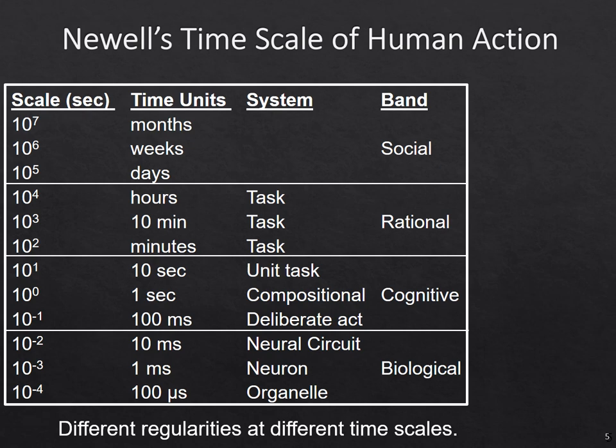There are regularities at these different timescales that can be studied somewhat independently of the timescales above or below them — similar to the concept in the physical sciences. In physics we talk about low-level physical activities; in chemistry there are regularities we can study independent of physics; in biology there are biological regularities that can often be studied independent of chemistry. Similarly, we can study different levels of cognition at these different timescales somewhat independently of the levels below them.